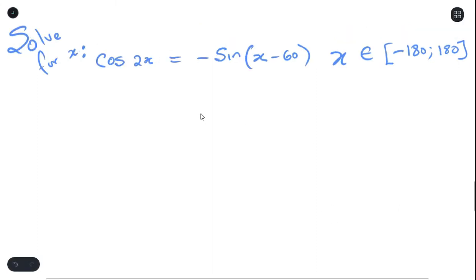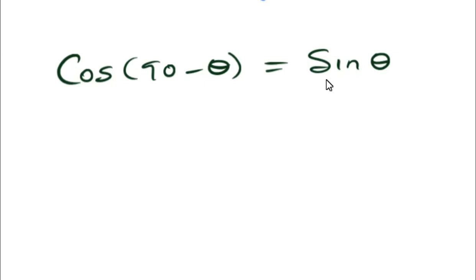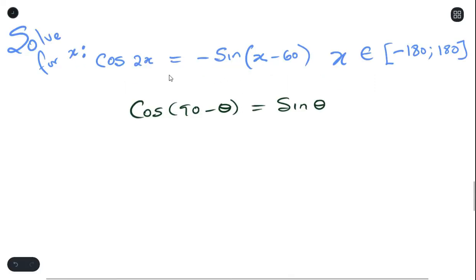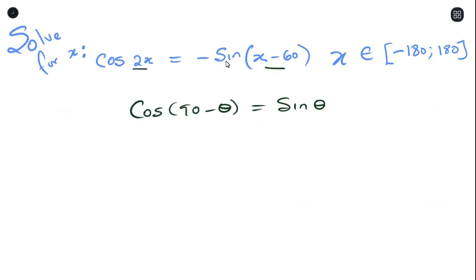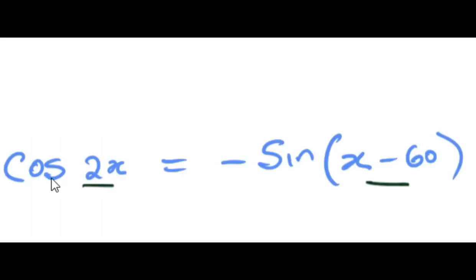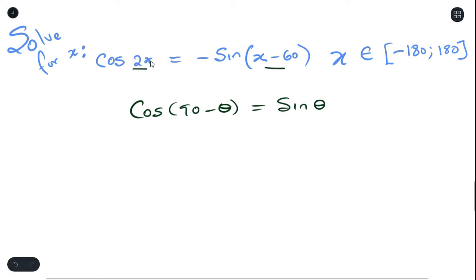To answer this, you need to understand co-ratios. The co-ratio concept tells us that to change from sine to cos, we say 90 minus the value. The tan method from the previous example won't work here because the values after cos and sine are different: 2x versus x − 60. So instead we change one side to match the other's trig ratio.